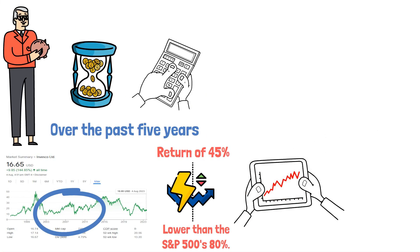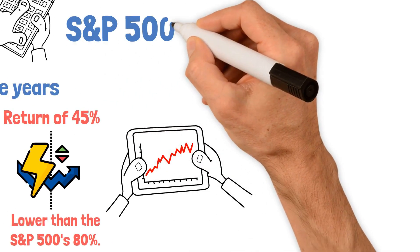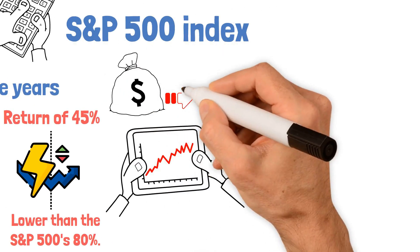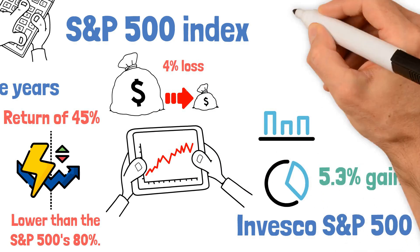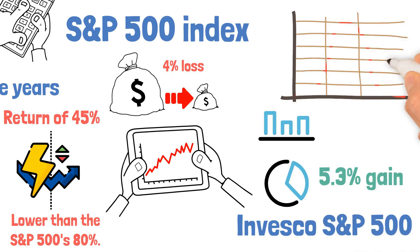For instance, while the S&P 500 index incurred a 4% loss last year, the Invesco S&P 500 High Dividend Low Volatility ETF achieved a 5.3% gain, further exemplifying its ability to weather market downturns.